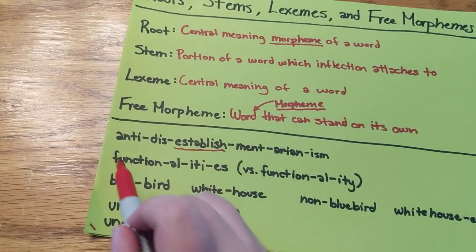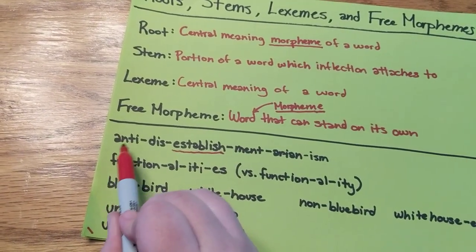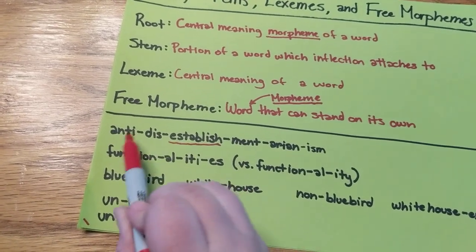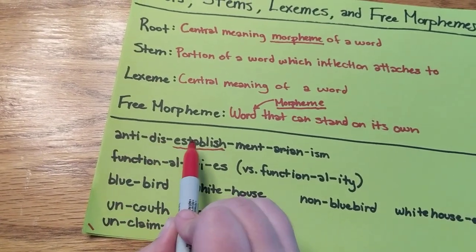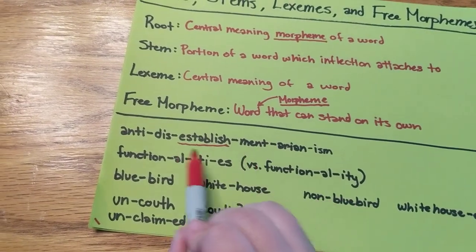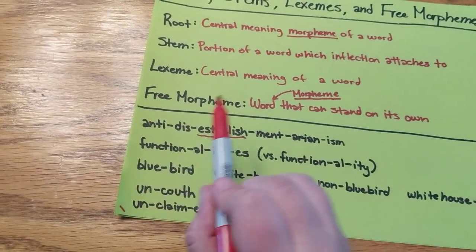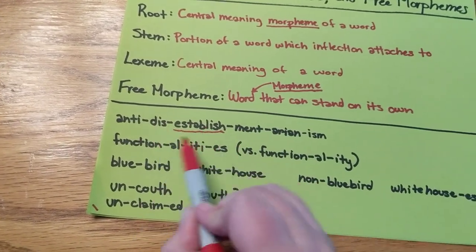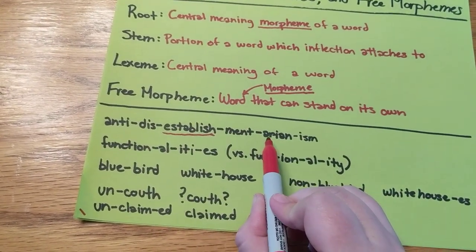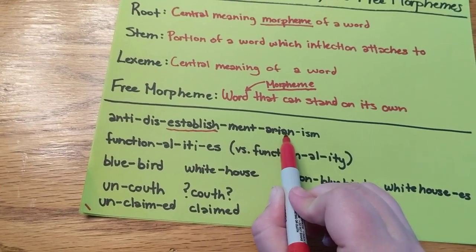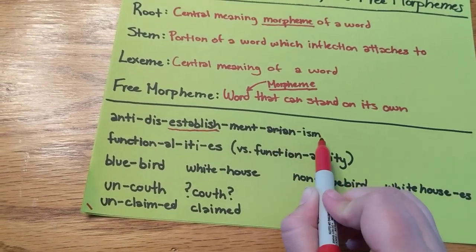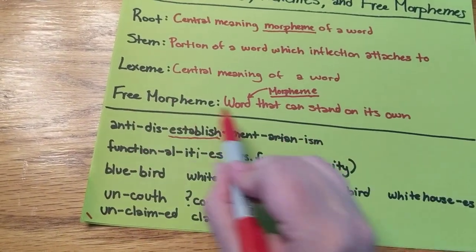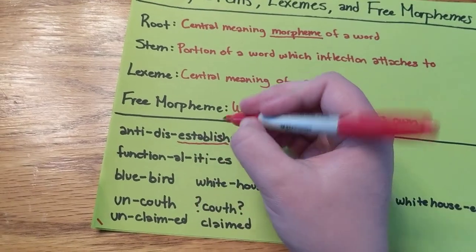What this word means is we're against doing whatever follows. Disestablish means unestablish, so we're against unestablishment — which makes this a noun, the act of unestablishing. These are people who are against unestablishing, and this is the belief that it is a good thing. So that all has to do with establish — this is our root.